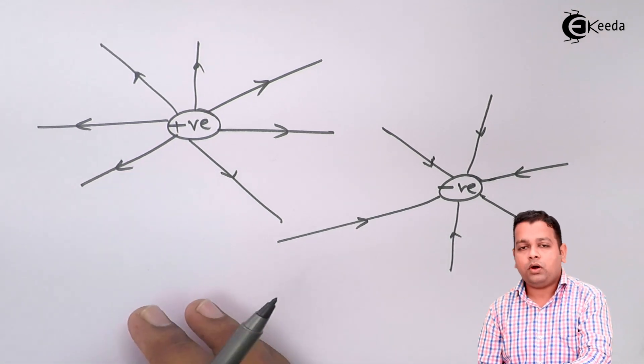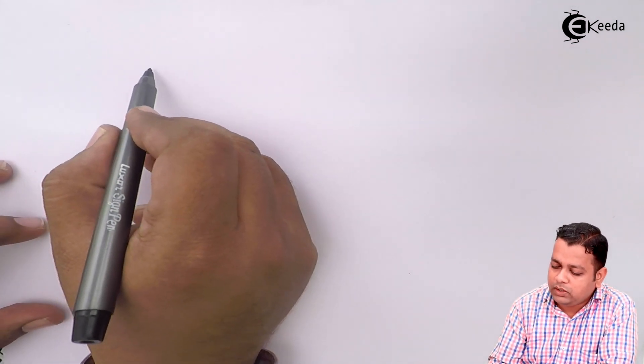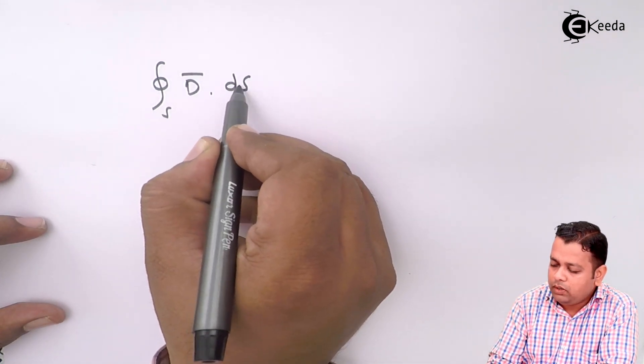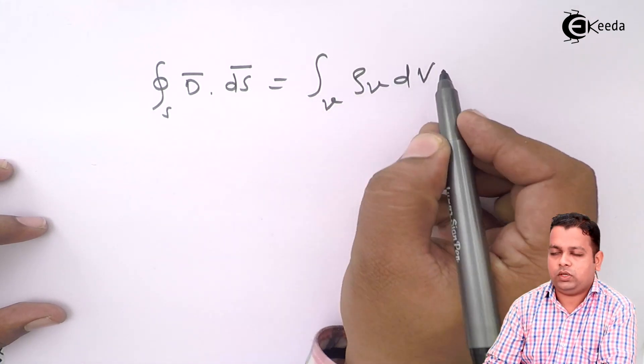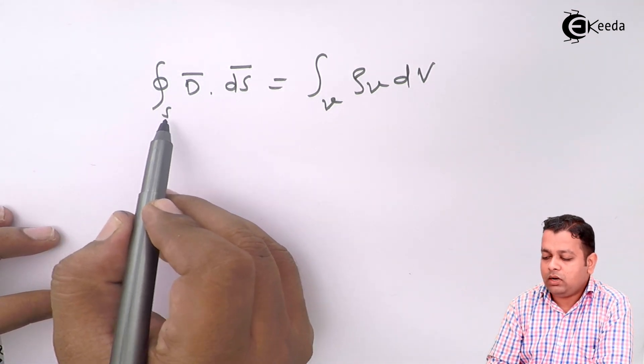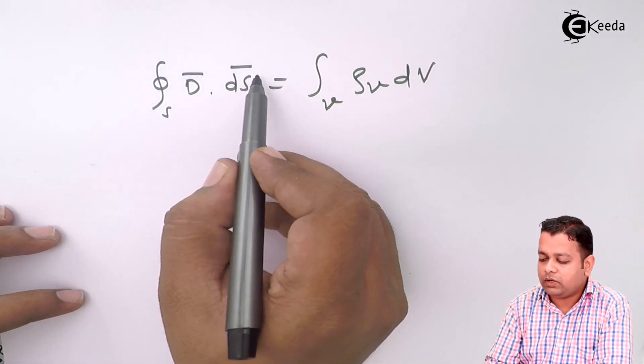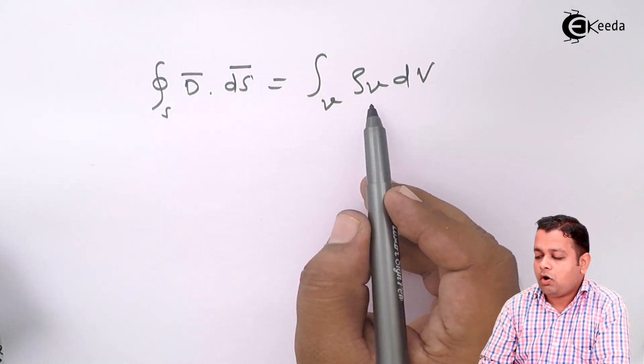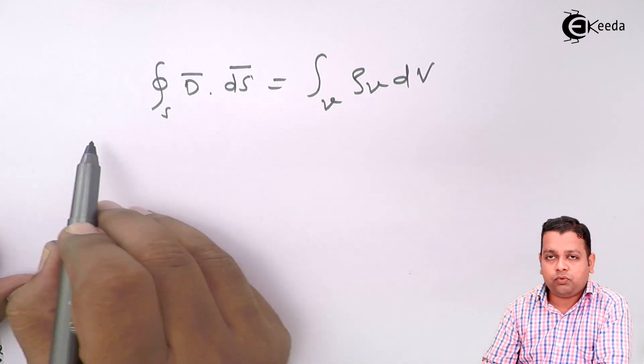Now according to Gauss's law in integral form, we have the representation: closed surface integral d bar dot ds bar equals volume integral rho dv. On left hand side we have closed surface integral, double integral, d bar is the electric flux density dot product with the differential surface. On the right hand side we have volume integral, triple integral of rho v dv, where rho v is the volume charge density. So this is the integral form representation.